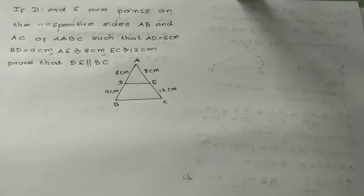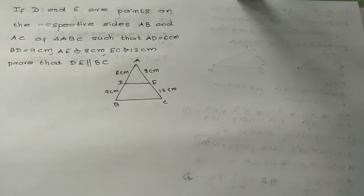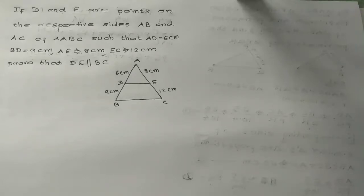If D and E are points on the respective sides AB and AC of triangle ABC, such that AD is equal to 6 cm, BD is 5 cm, AE is 8 cm, and EC is 12 cm — prove that DE is parallel to BC.